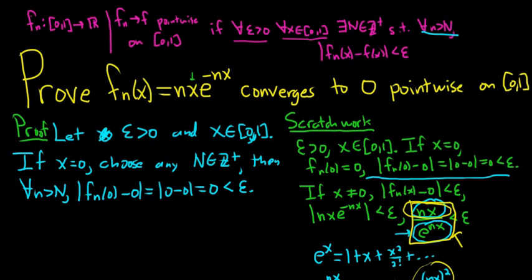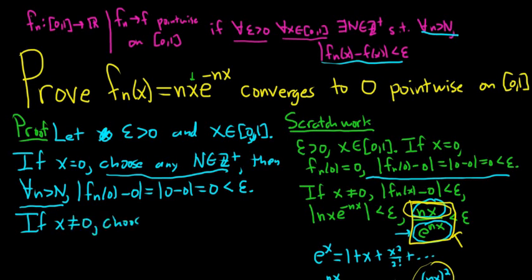Notice we've handled x equals 0 by choosing any N. But if x is not equal to 0, we're going to choose N greater than 2 over (epsilon·x). We're showing pointwise convergence, so N can depend on x — it's a different N for the two cases. When x is 0 we can use any N, but when x is not 0 we have to choose this specific N bigger than 2 over (epsilon·x).